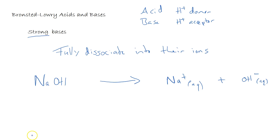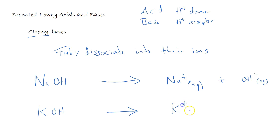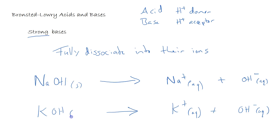Strong bases tend to form hydroxides. Another example would be potassium hydroxide, which gives us K⁺ (aq) and OH⁻ (aq), both of these formed from the solid.